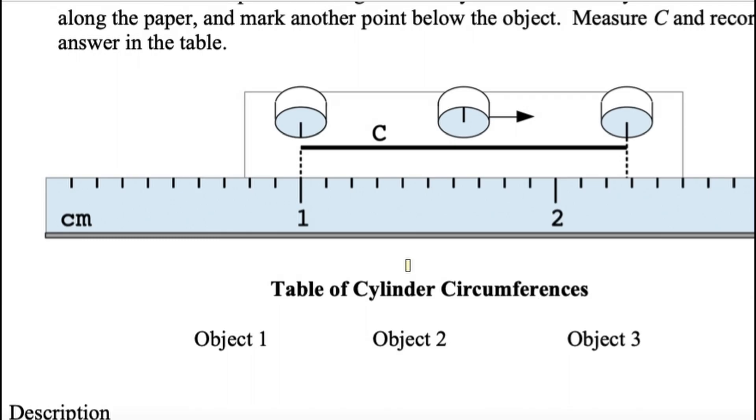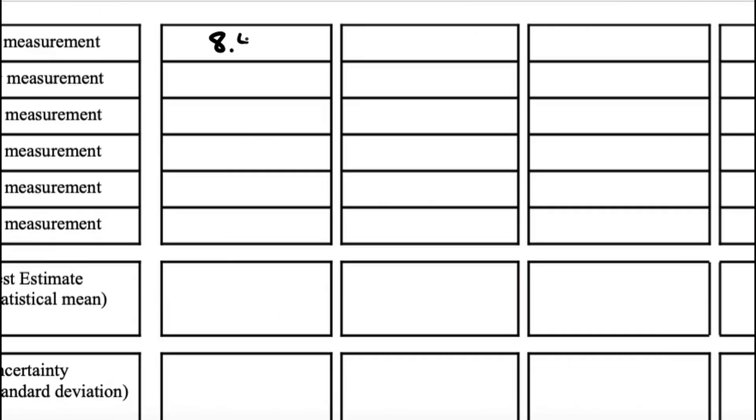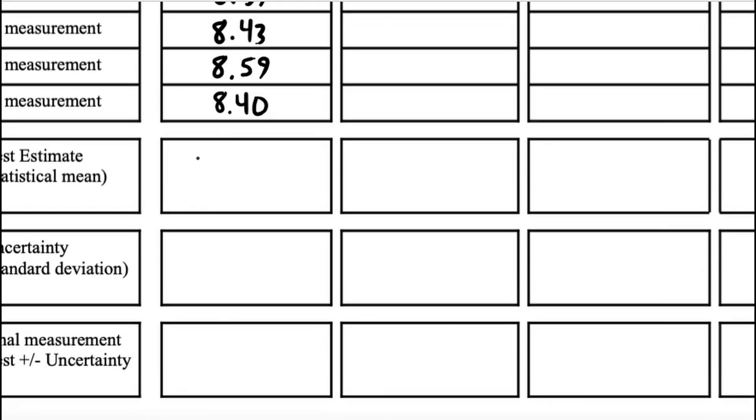So just mark it again, roll it, make another ending mark, and then just measure. That will give you six circumferences to work with. I'll write down what mine were. 8.42. Which process do you think has more error in it? Yeah, this one for sure, because the thing can slip.